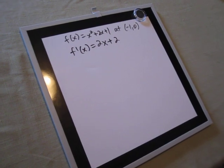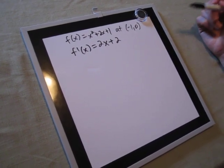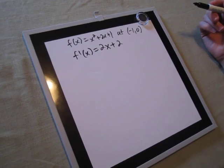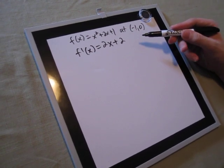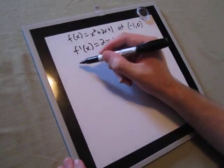Now, in order to get the slope of the curve at the point (-1, 0), we need to plug the x-coordinate of the point into the derivative. The x-coordinate is -1.